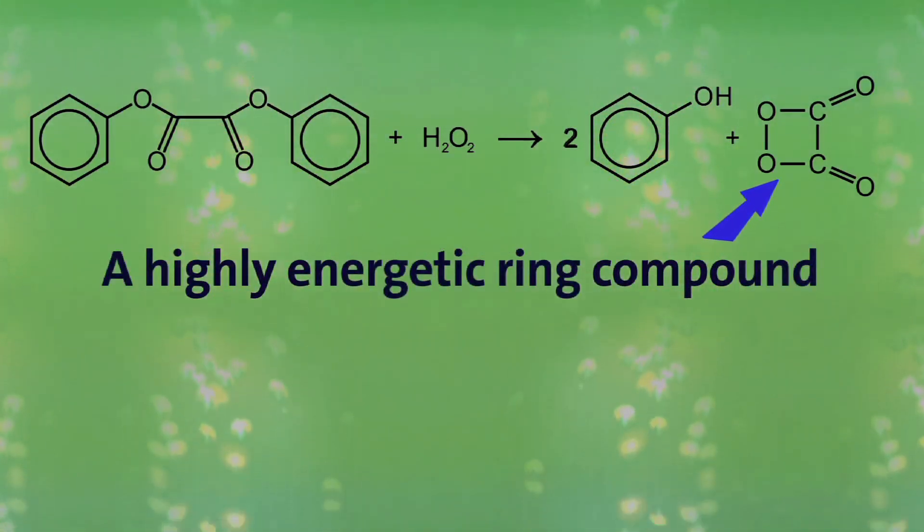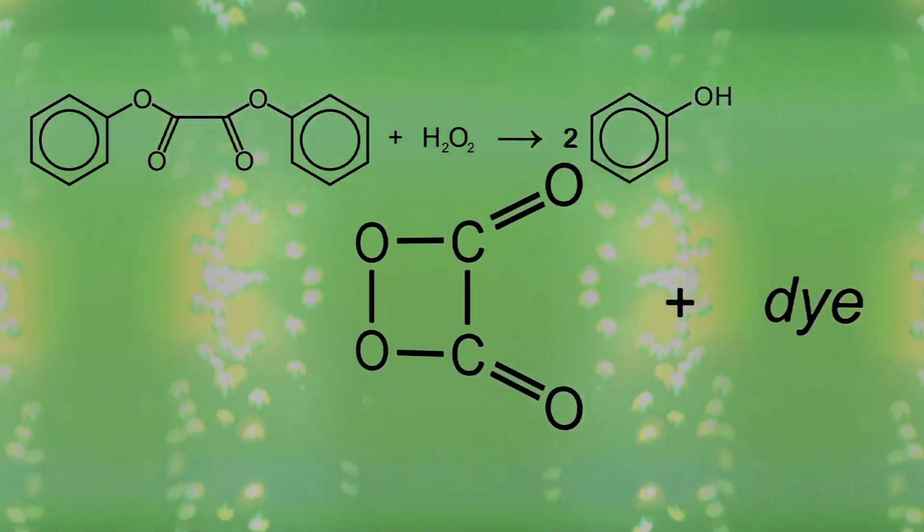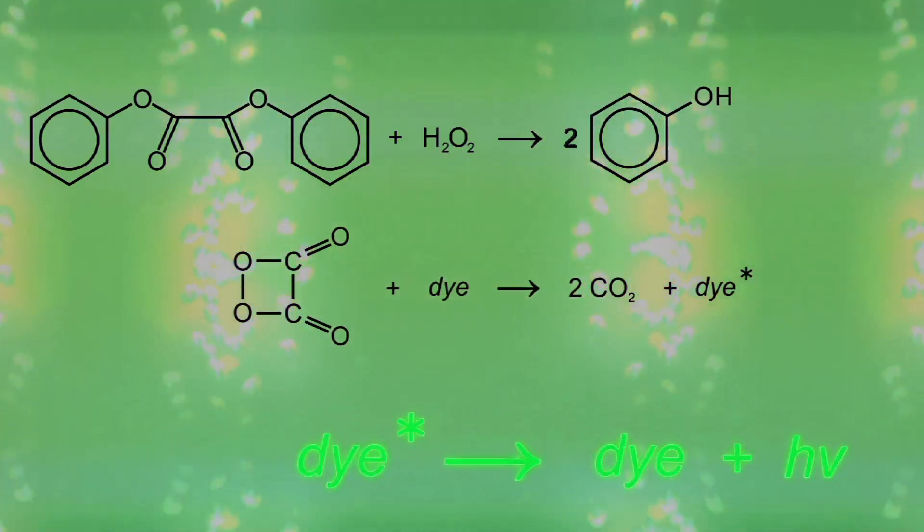The peroxy acid ester decomposes to form more phenol, and most importantly, a highly energetic ring compound. As this ring compound decomposes into two carbon dioxide molecules, it gives up its energy to the dye molecule, which makes it light up in impressive fashion.